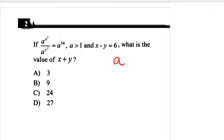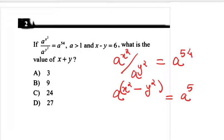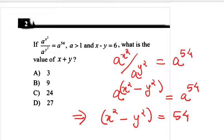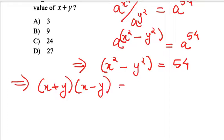It is given that a^(x²) divided by a^(y²) is equal to a^54. So that is a^(x² - y²) = a^54. Since the bases are equal, that implies x² - y² = 54. Now x² - y² means (x + y)(x - y) = 54.